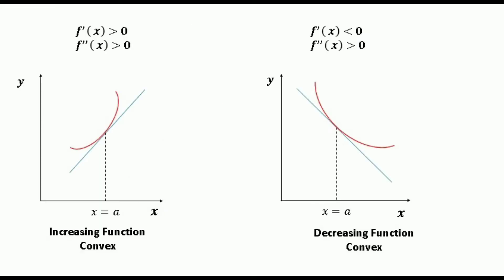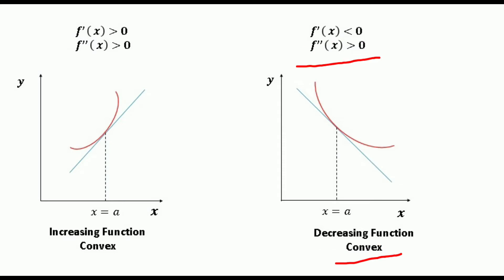The second graph shows a function which also lies completely above its tangent line, but here f'(x) < 0, so the function is decreasing. However, we have a positive second derivative at x = a, which denotes the function is convex to the origin at x = a — it is decreasing but still convex.